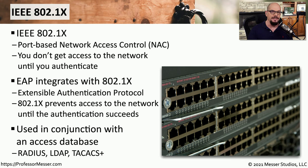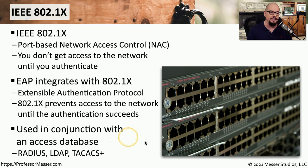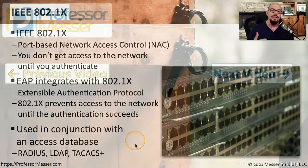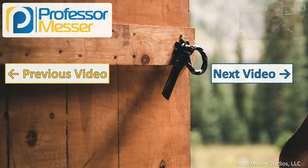When a user first tries to connect to the network, 802.1X stops that connection and requests credentials. The user provides a username, password, and any other required authentication information. Those credentials are then checked against the back-end databases. If authentication is successful, the user is granted access to the network.